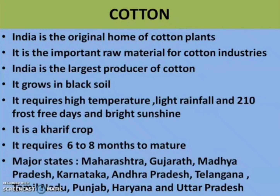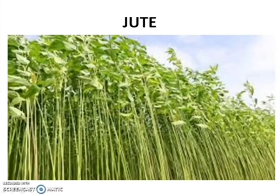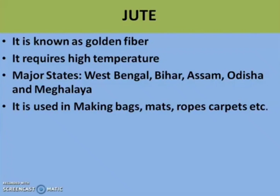The next fiber crop is jute, also known as golden fiber. It requires high temperature. The major states are West Bengal, Bihar, Assam, Odisha and Meghalaya. It is used in making bags, mats, rope, carpets, etc. These are the major crops grown in India, all with high economic and market value across the world. In summary, the crops studied include rice, wheat, sugarcane, pulses, tea, cotton, jute, etc.